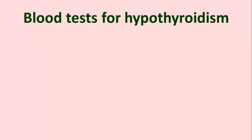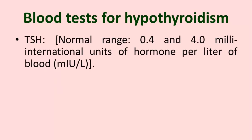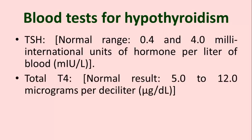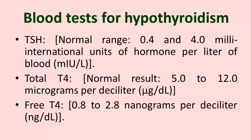Blood tests for hypothyroidism include: TSH (thyroid stimulating hormone) — normal range is 0.4 to 4 milli-international units of hormone per litre of blood; Total T4 (thyroxine) — normal level is 5 to 12 micrograms per deciliter; and Free T4 (free thyroxine) — 0.8 to 2.8 nanograms per deciliter.